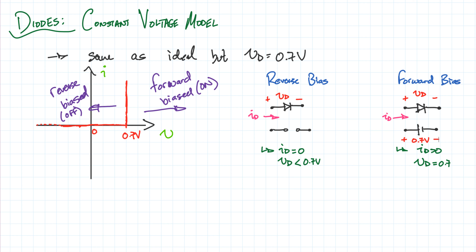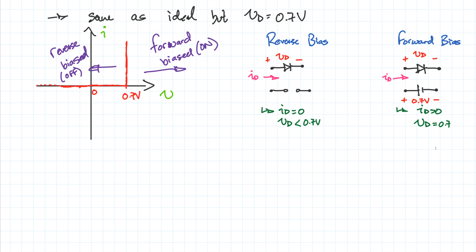The only difference between the ideal and constant voltage models is that the boundary shifts from 0 to 0.7 volts. We use 0.7 because it's a more realistic approximation — the average diode turns on at about 0.7 volts, as we'll confirm with the exponential model. For most diode circuit analysis, this 0.7 volt drop is reasonable: diodes typically start turning on around 0.65–0.67V and are fully on at 0.7V.